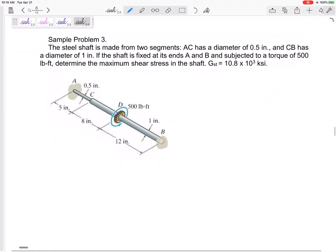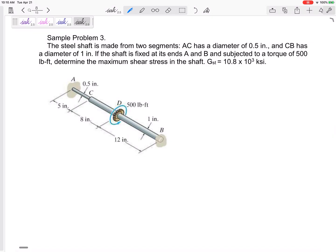Okay, but we're going to focus on the torsional type of this problem. So what if we have this one? We've got a steel shaft made up of two segments. AC has a smaller diameter of 0.5, CB has a larger diameter of 1. It has fixed ends, and it has a torque of 500 pound feet to determine the maximum shear stress in the shaft.